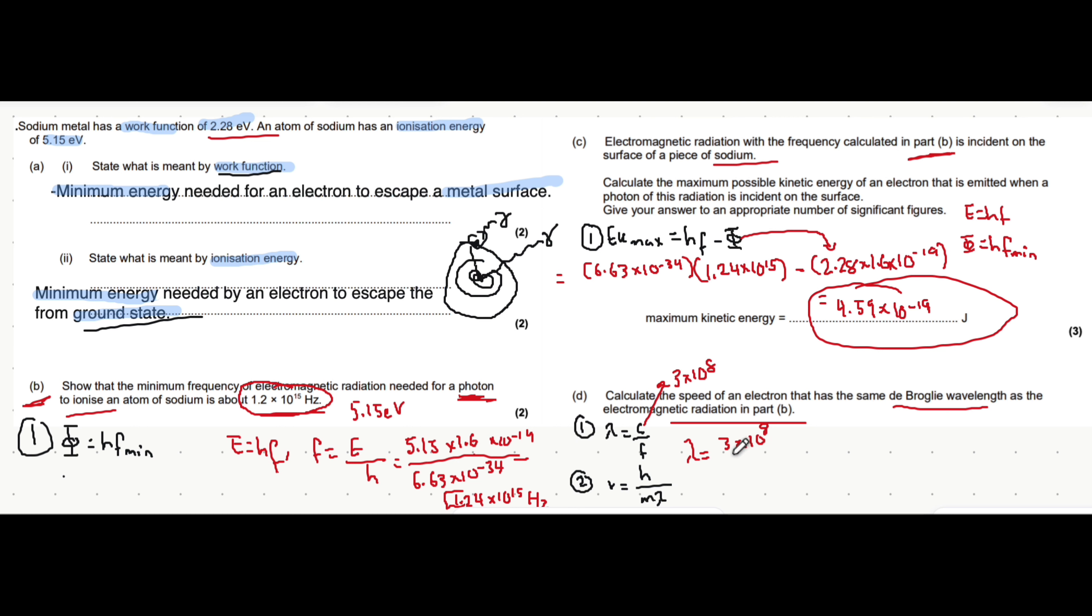By the way, if you got an incorrect value here but you end up using this value later in the question, you'd still get the method mark. That wavelength equals 2.42 times 10 to the minus 7 meters.